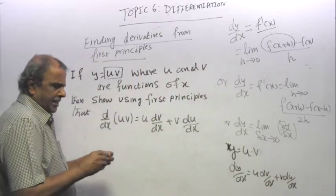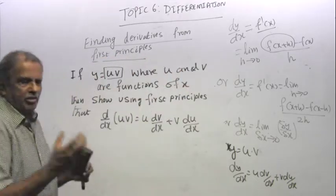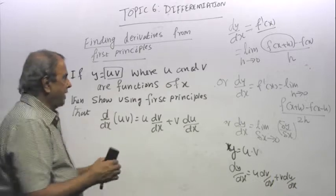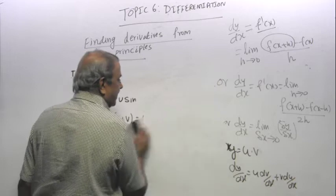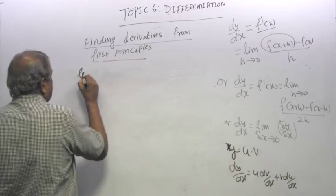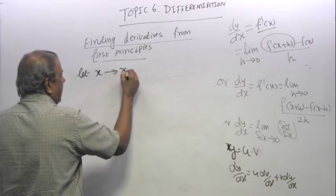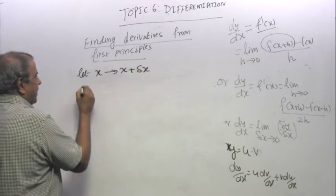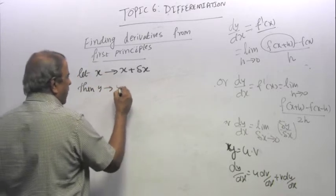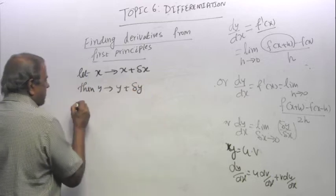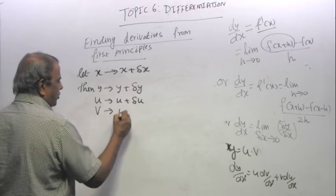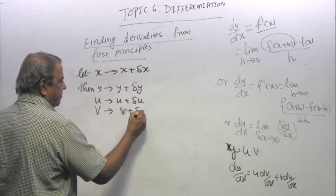What do you understand by f of x plus h? That means you are increasing the value of x by a small quantity h. Instead, that is why I want to take this, so that you get used to all the three definitions. So let x become x plus delta x, then y becomes, when x changes by a small quantity, y will also change by a small quantity, u will also change by a small quantity, v will also change by a small quantity.